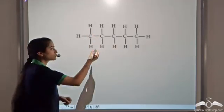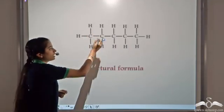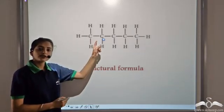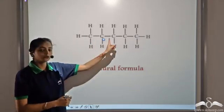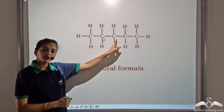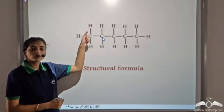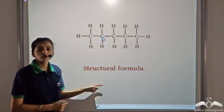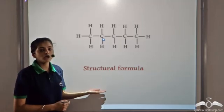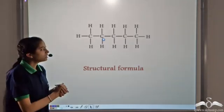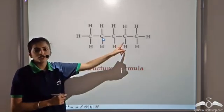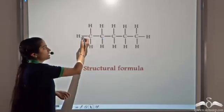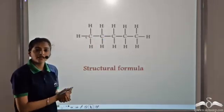This is the structural formula of an organic compound. All the carbon atoms are linked to themselves by covalent bonds, and the carbon atoms are also linked to the hydrogen atoms by covalent bonds. Now if we have a long chain, it becomes really tedious to write and make all these covalent bonds again and again.